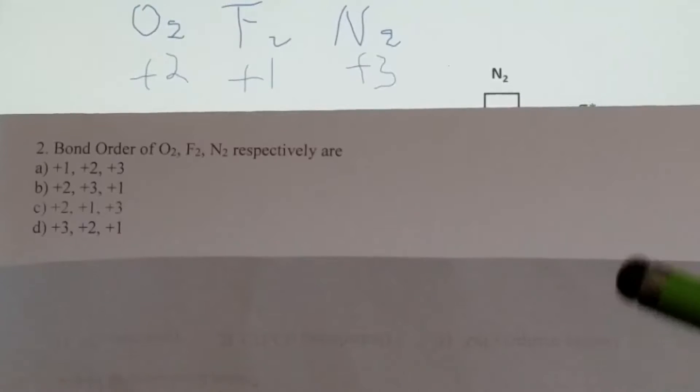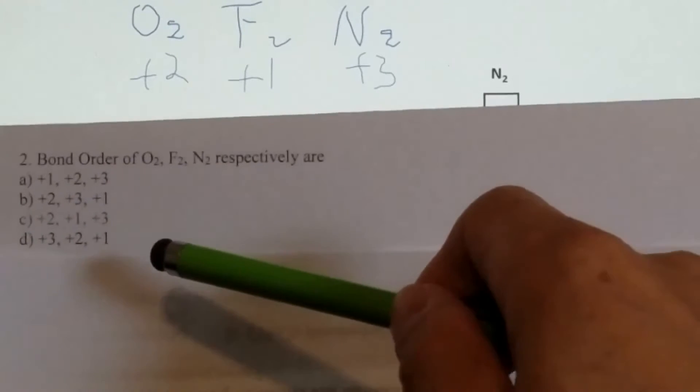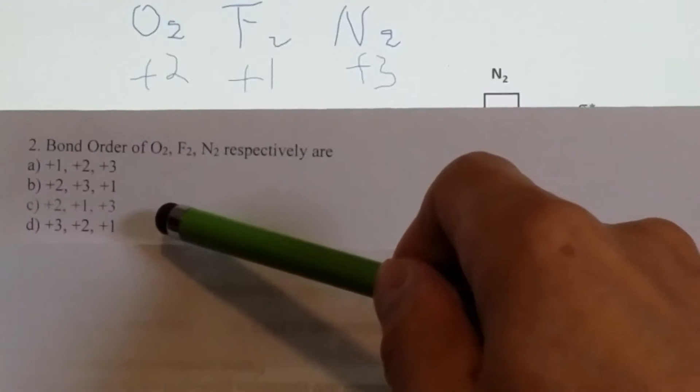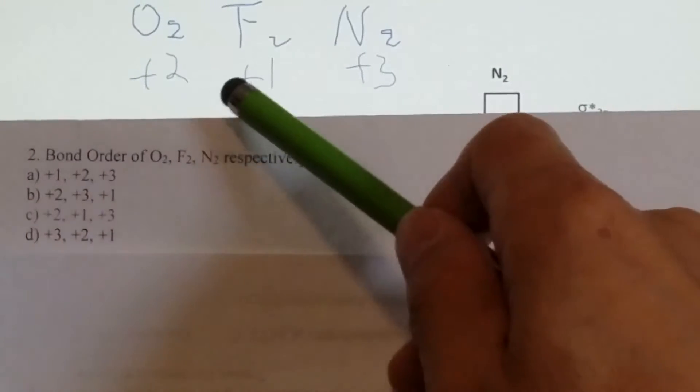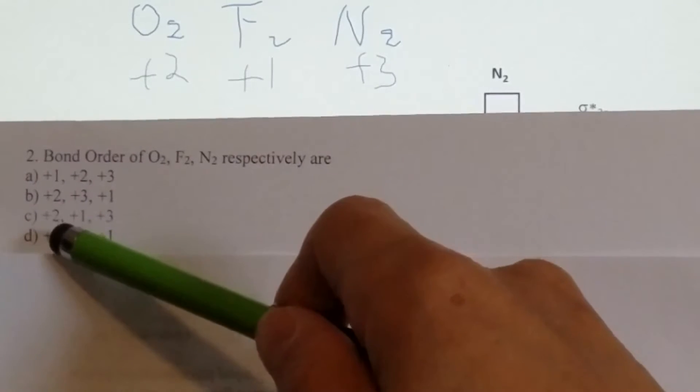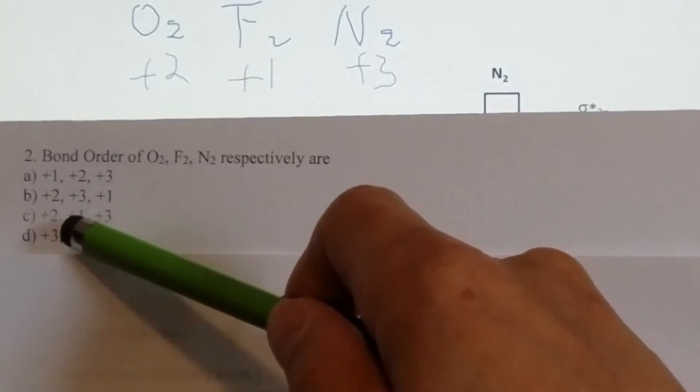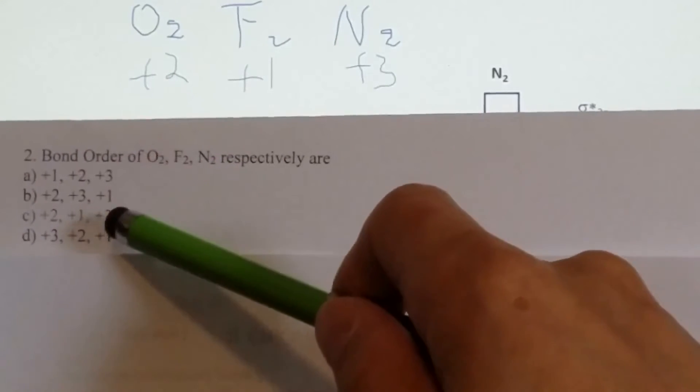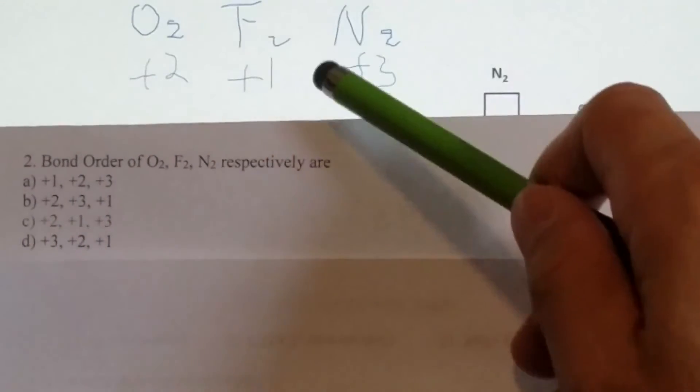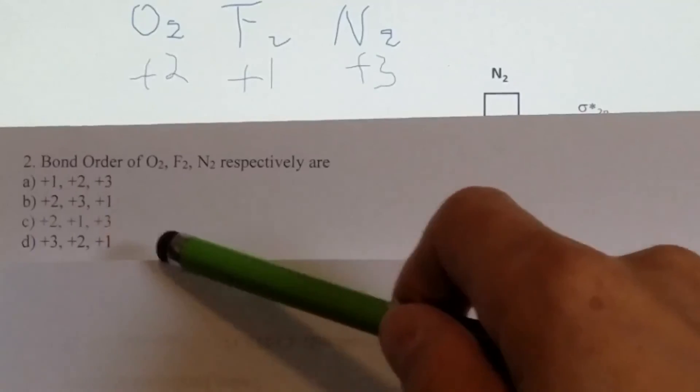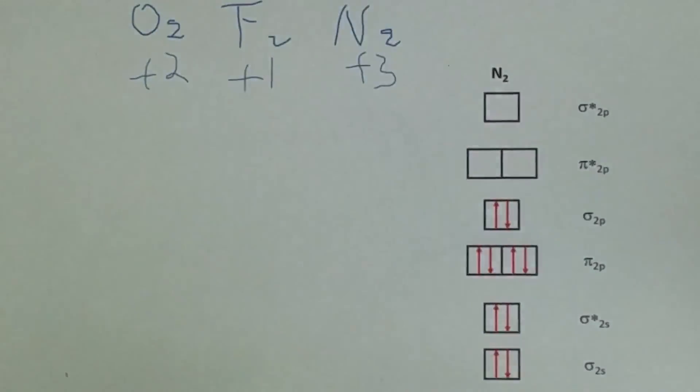Now when we look at the choices, as you can see, C matches what we have: positive 2 for oxygen, positive 1 for fluorine, positive 3 for nitrogen. That's exactly what we have. Therefore, C is the correct answer.